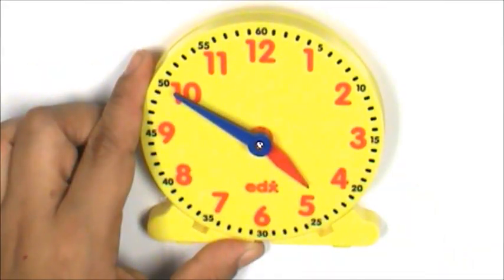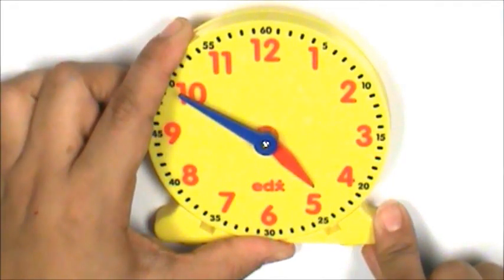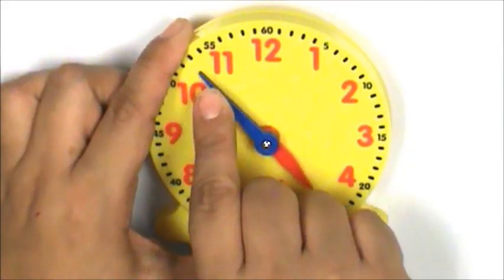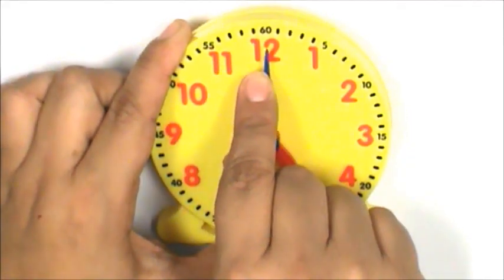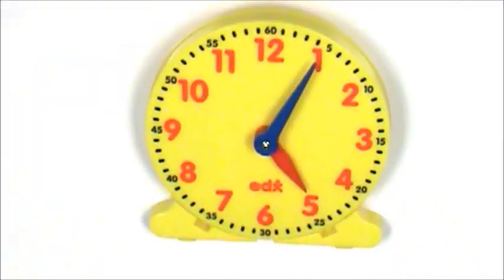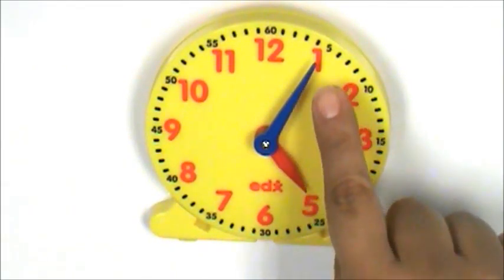The new time is 4:50. If we go back to the problem, we can see that Amy stayed 15 minutes for an exercise class. So let's move the minute hand 15 minutes. 5, 10, 15. The hour hand moved to the next hour. Amy went home at 5:05.